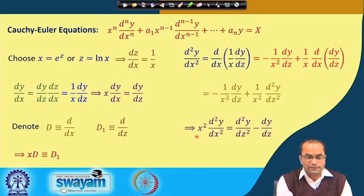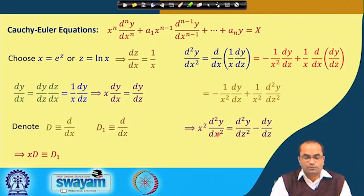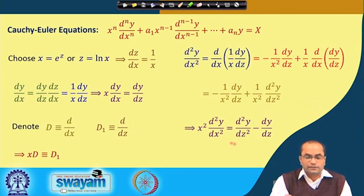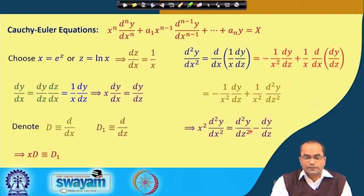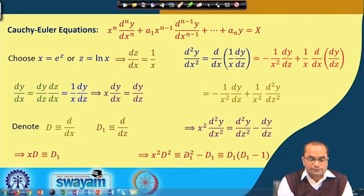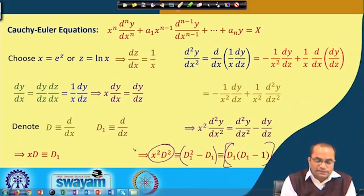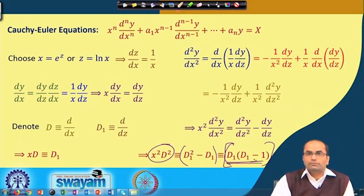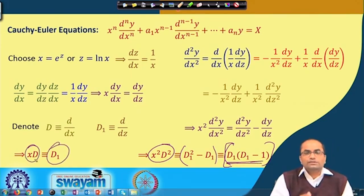Multiplying by x², we get x²·(d²y/dx²) = d²y/dz² - dy/dz. In operator form, x²D² = D₁(D₁ - 1). Similarly, x³D³ = D₁(D₁-1)(D₁-2). In general, x^n D^n = D₁(D₁-1)(D₁-2)···(D₁-n+1). So xD = D₁, x²D² = D₁(D₁-1), x³D³ = D₁(D₁-1)(D₁-2), and so on.